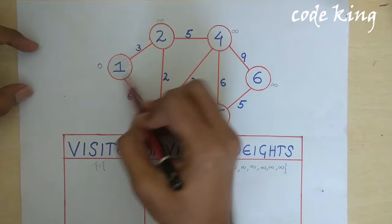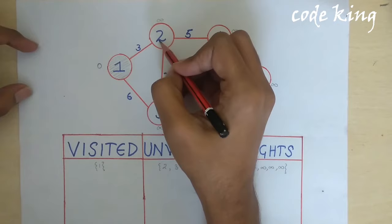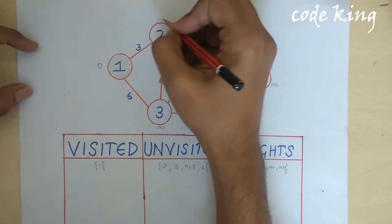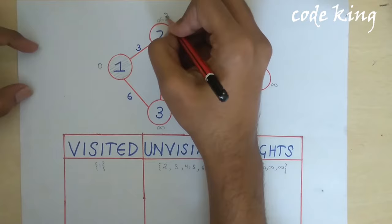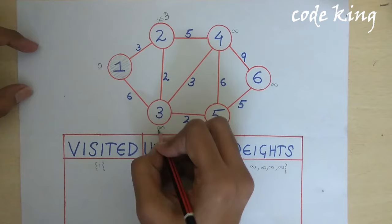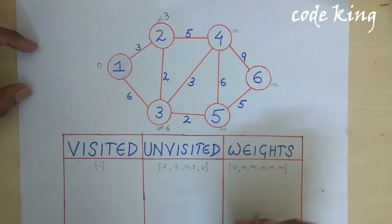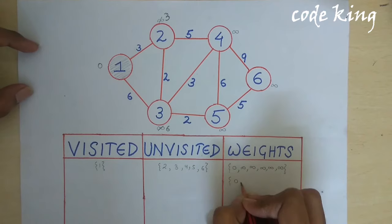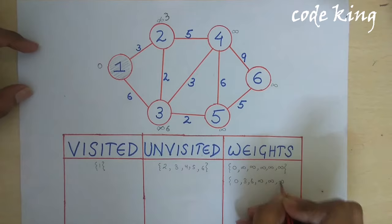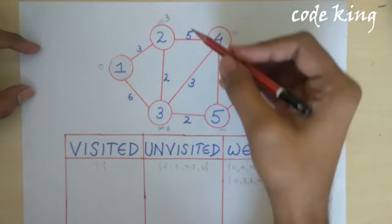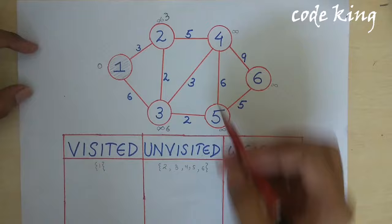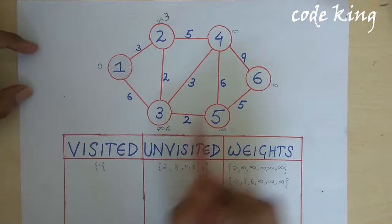Now we have marked node 1 visited, so we are shading it for clarity. Going to the second node, the distance is 3; 0 plus 3 is 3, which is less than infinity, so we update the distance to 3. For the next neighbor: 0 plus 6 is less than infinity, so it's 6. The new weights are: 0, 3, 6, infinity, infinity, infinity. We then take the node with weight 3 — node 2 — and node 3 has weight 6.